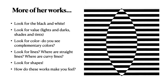As we look at more of her works, I want you to look for black and white, and look for value — that's where we see things that are lighter or darker, like shades and tints. Look for color. Do you see complementary colors? Those are colors that are opposite on the color wheel — purple and yellow, blue and orange, and red and green. You might use some of those in your Bridget Riley inspired artwork. Also look for lines — straight and curvy — and look for shapes. Check out how these works make you feel.